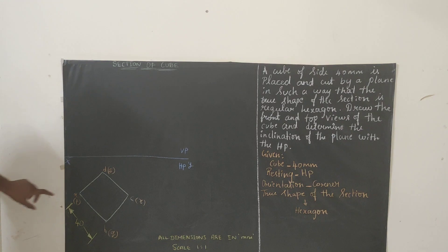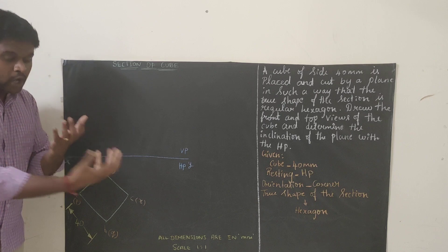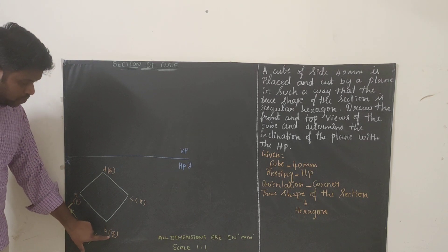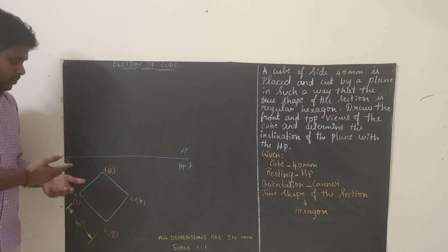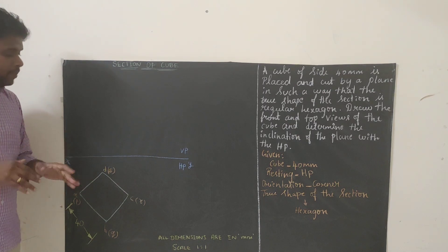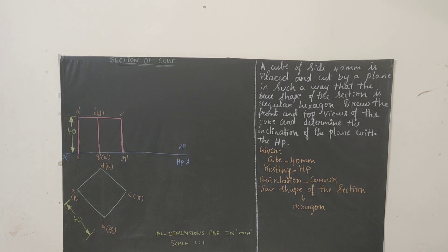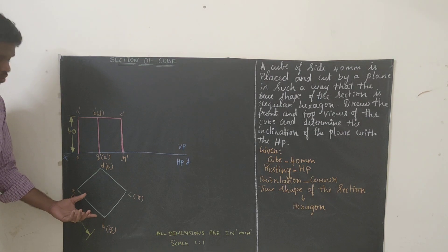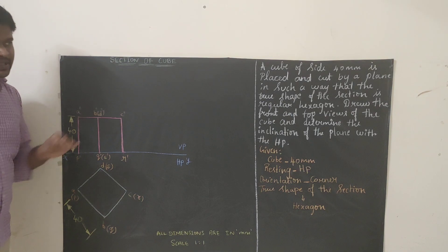You have to name it like this: A, B, C, D for the top surface, and P, Q, R, S for the bottom surface. We have named all the corners and edges of the cube. Now we have drawn the top view. Next, we need to project all the points and draw the front view.